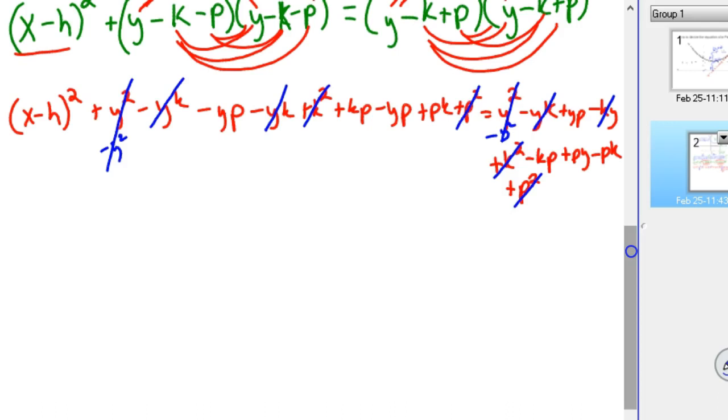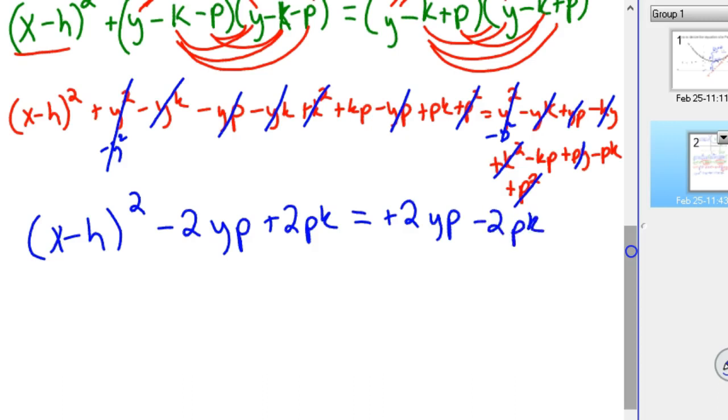And so you can rewrite this thing as X minus H squared, we've got minus two YPs, so now those are gone. We've got two PKs, and on the right side here, we've got two YPs, and minus two PK, is all that's left.